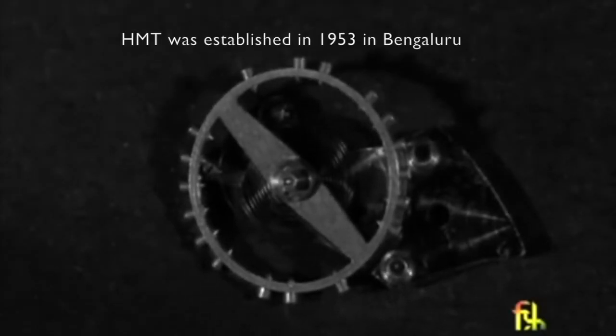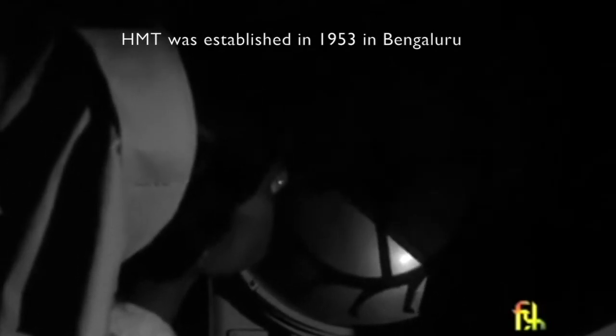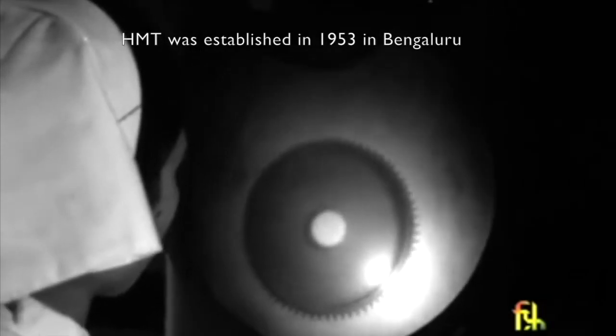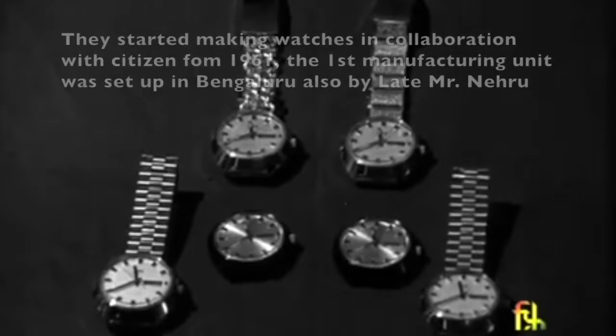HMT was first set up in 1953 in Bengaluru. The then Prime Minister of India, Mr. Nehru, went on a visit to Japan and he was presented a Citizen watch. He was so excited to get the watch that he came back to India and said that he wanted to bring in a sense of time consciousness within the Indians.